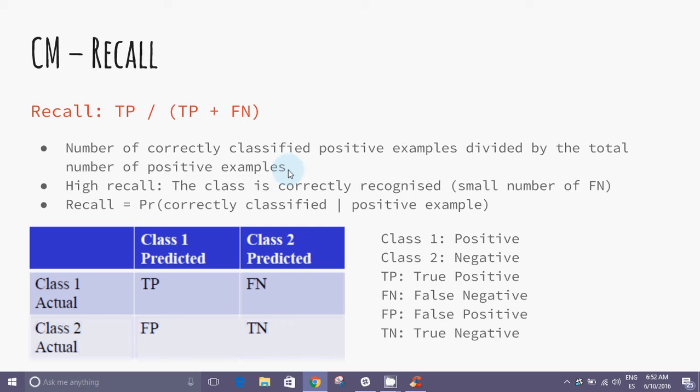We define recall as the number of correctly classified positive examples divided by the overall number of positive examples, i.e., the sum of the true positives and false negatives. The recall variable is inversely related to false negatives: the lower the false negatives, the greater the recall rate. If we consider recall from the point of view of probabilities, it would be the probability of a correct classification subject to a positive example.